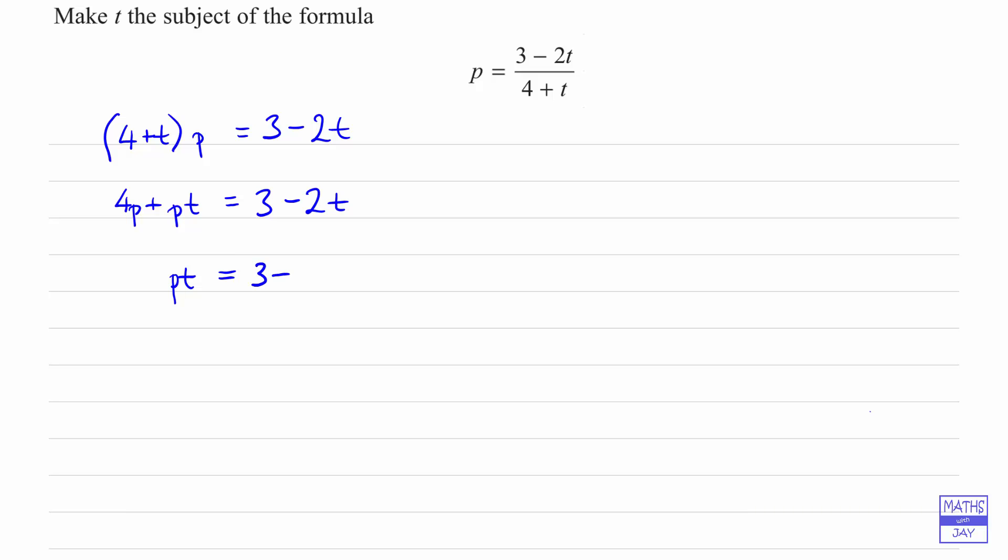So we've still got the 3 minus 2t on the right hand side. We've taken 4p away from the left hand side, so we're going to take it away from the right hand side as well.